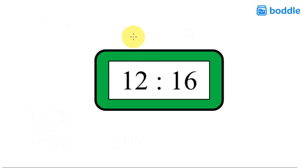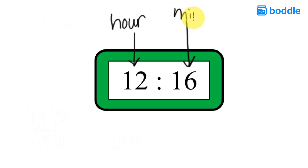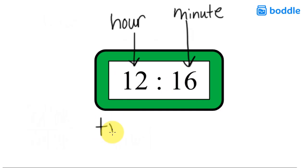The digital clock: the first number is our hour, so it is 12 o'clock or 12 something. The second number after the colon, or these two dots, is our minute time. So this clock reads 12:16. You can also write it in words as twelve sixteen.